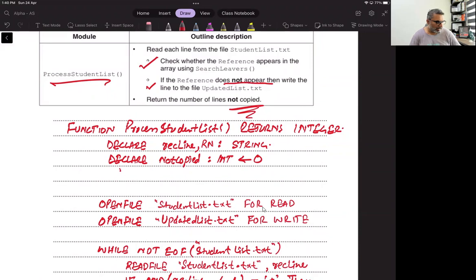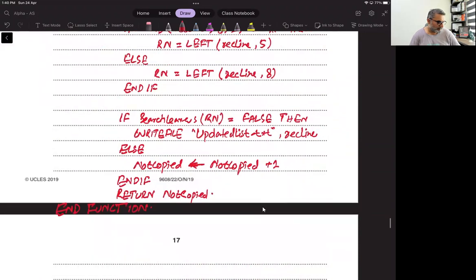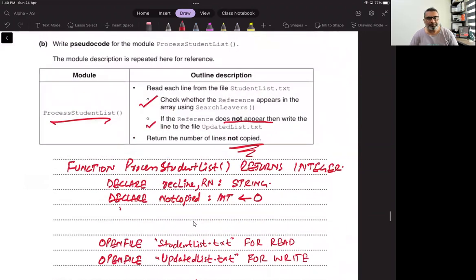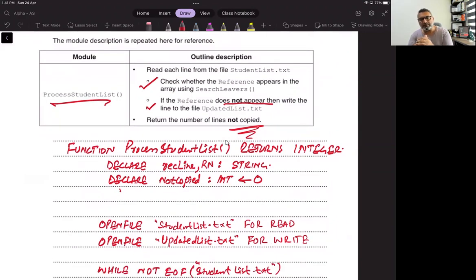Then it says return the number of lines not copied. So it's like reading a record from the file, extracting the reference number, then calling search leavers. And if search lever says it is false, then we write that record to the new file that is updated list.txt. And if it says true that that reference already exists, then we just count it. We count it because we have to return the number of lines that were not copied.